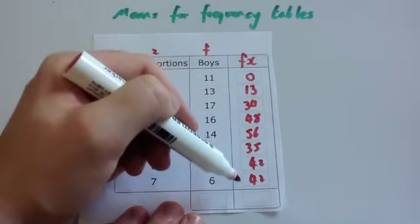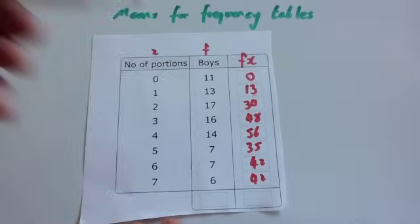Then what you do is you add up the fx column to get the grand total. So we're going to add up these numbers.